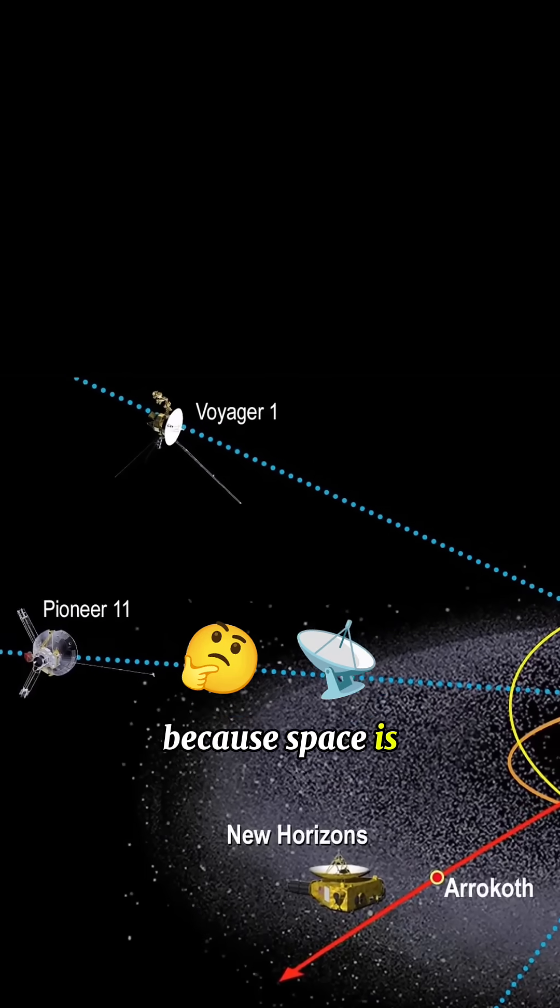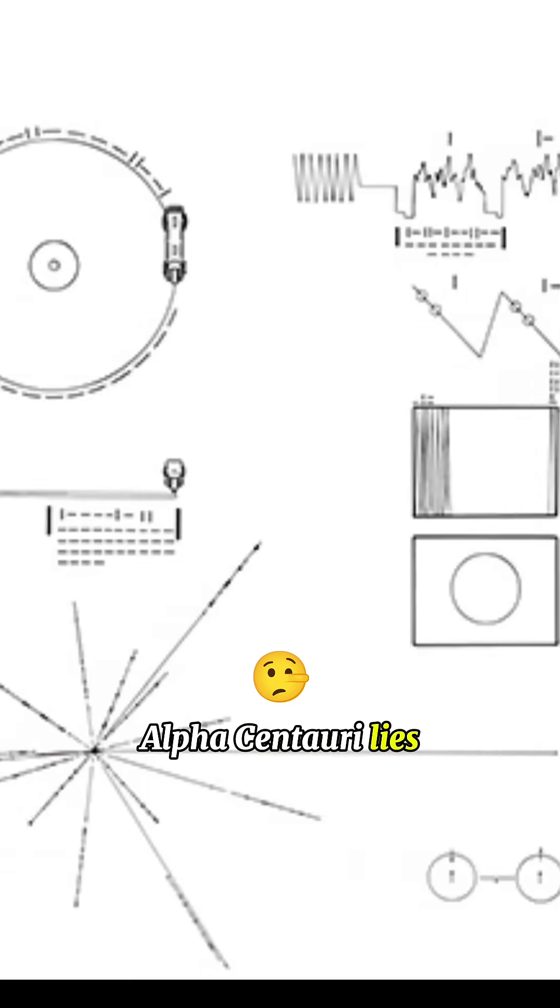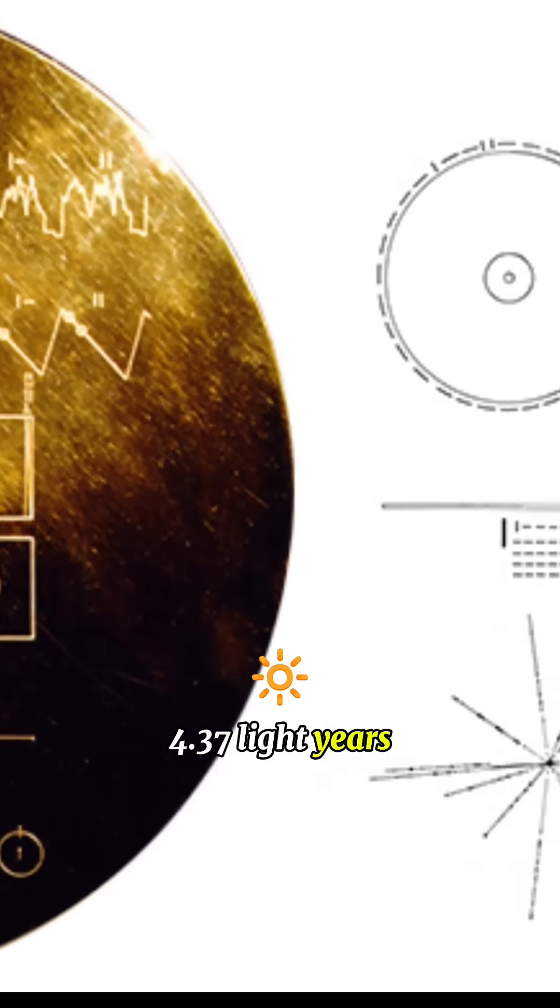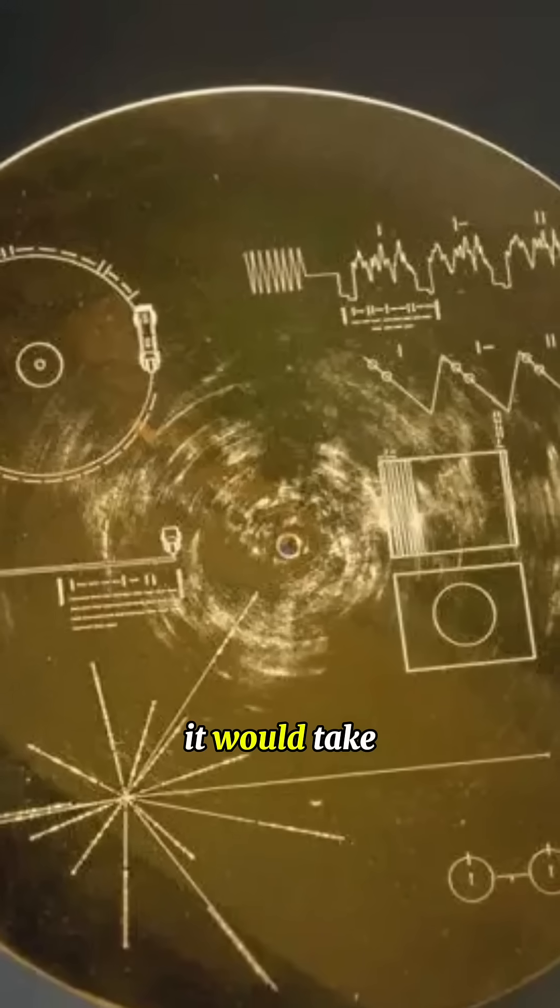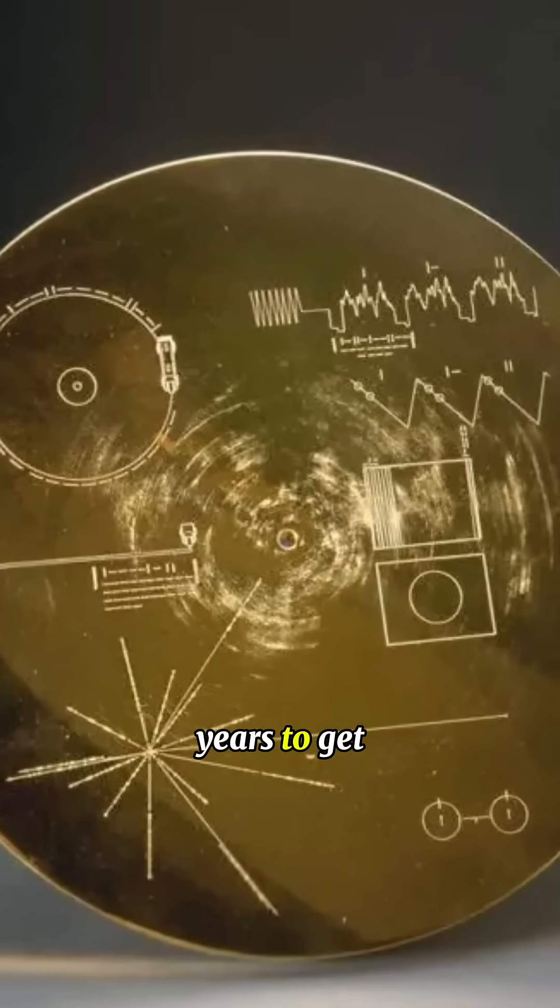Because space is unimaginably vast. Alpha Centauri lies 4.37 light-years away. That's over 40 trillion kilometers. At Voyager's current speed, it would take more than 70,000 years to get there.